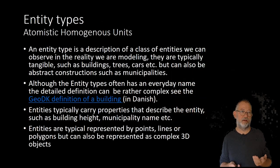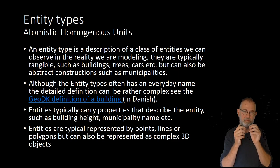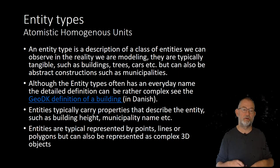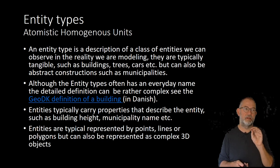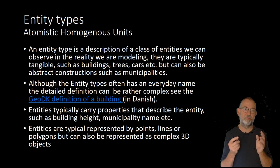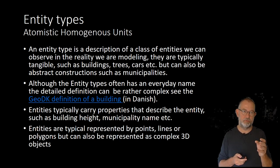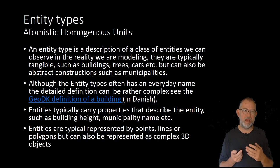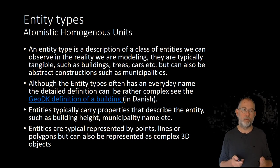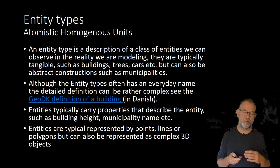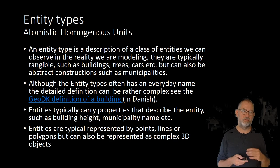Looking more closely at the entity type: the entity type could be buildings, lakes, streams, land cover, or whatever. Entities are descriptive of some form of object. They are typically tangible, but they can also be abstract — such as municipalities, countries, or nations. So they can also be abstract objects in our world of discourse, but typically they are tangible, and we talked about them having attributes.